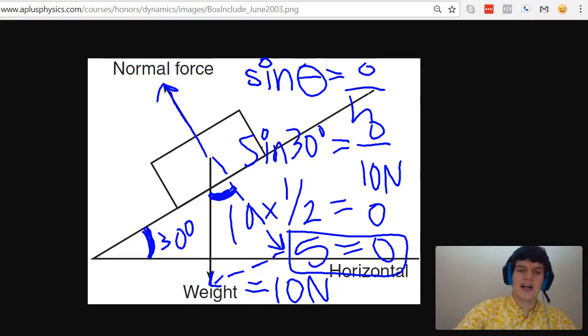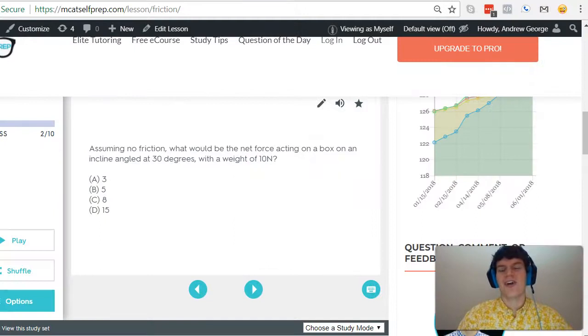By opposite, we're talking about this x component right here, therefore the net force is going to be 5 newtons. Taking a second look at our answer choices we noticed that answer choice B is the correct answer.